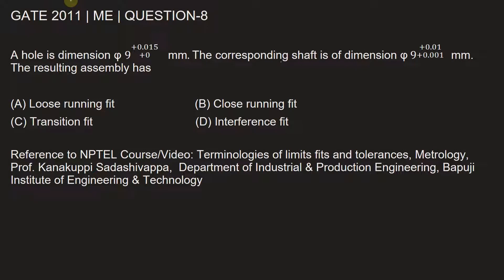This question is from GATE 2011 Mechanical Engineering paper, question number 8. A hole is of dimension diameter 9 millimeters with tolerance values of +0.015 millimeter being the upper value while +0 millimeter being the lower value. The corresponding shaft is of dimension diameter 9 millimeters, upper limit of tolerance +0.01 millimeters and lower limit